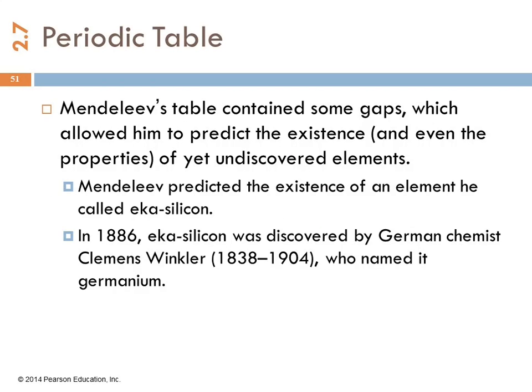There were gaps in the table though, because there were some elements that had not been discovered. And so what he did is he predicted with surprising accuracy that there would be elements discovered. And he went so far as to predict their properties. So he predicted an element he called eka-silicon, which means below silicon. So he said, there's a hole here. There should be something. We're going to find it someday. And in 1886, it was discovered by Clemens Winkler, who named it germanium after his country, Germany.